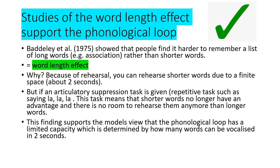A strength is studies of the word length effect supporting the phonological loop. Baddeley et al. in 1975 showed that people find it harder to remember a list of long words - for example, 'association' - than shorter words. This is because of rehearsal: you can rehearse short words within the finite space of about two seconds. However, if you use an articulatory suppression task, such as repeatedly saying 'la la la', shorter words no longer have an advantage over longer ones, as there is no room to rehearse either. This supports the model's view that the phonological loop has a limited capacity determined by how many words you can vocalise in two seconds.